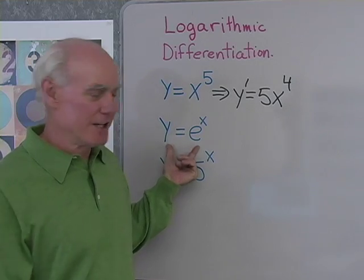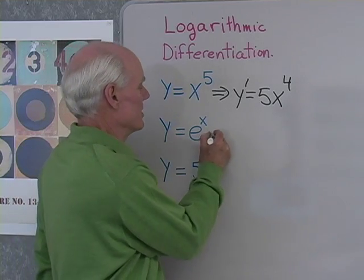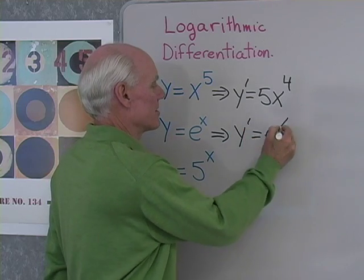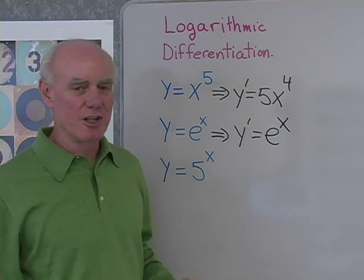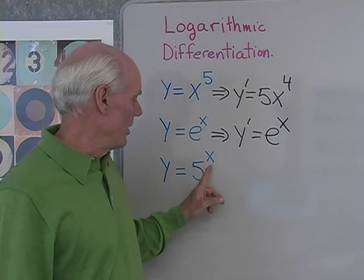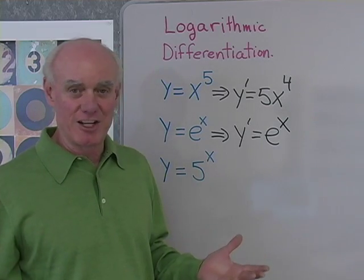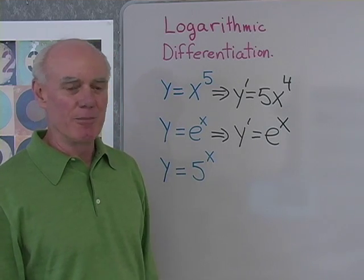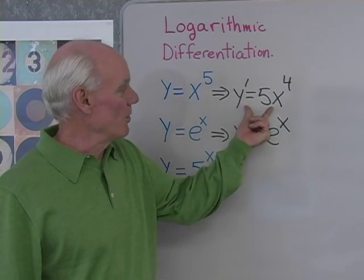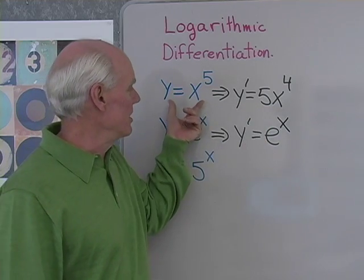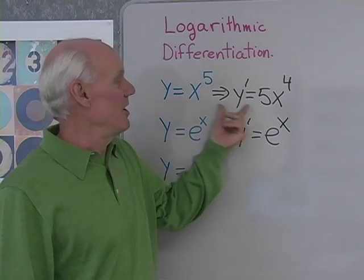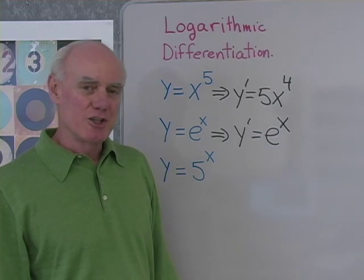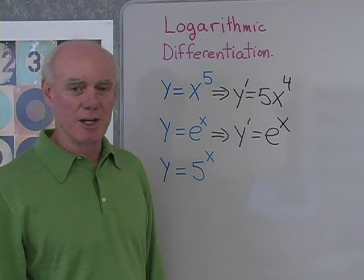If I have y equal e to the x, that's also easy — that derivative is just itself, y equal e to the x. But here's the situation I have not encountered before in trying to take derivatives, where my exponent contains the variable. I can't use the power rule because the derivation of that rule depended on this exponent being a real number. So I'm going to have to do something else.